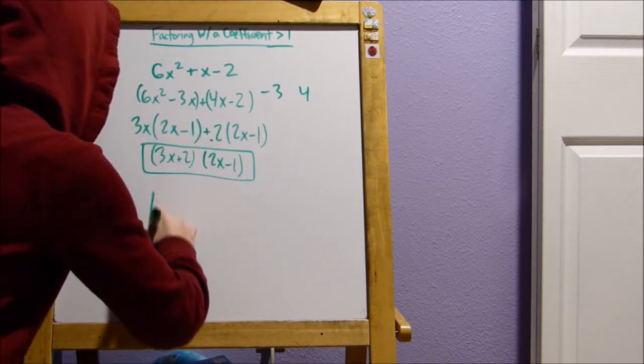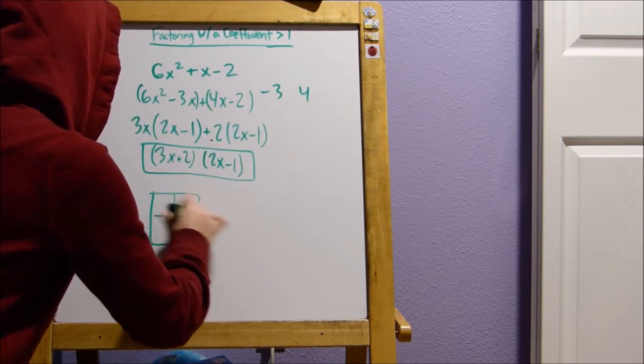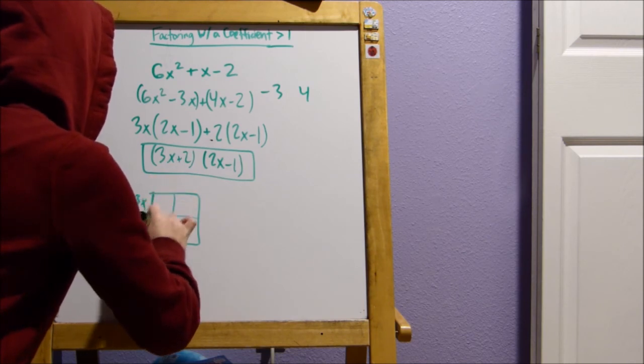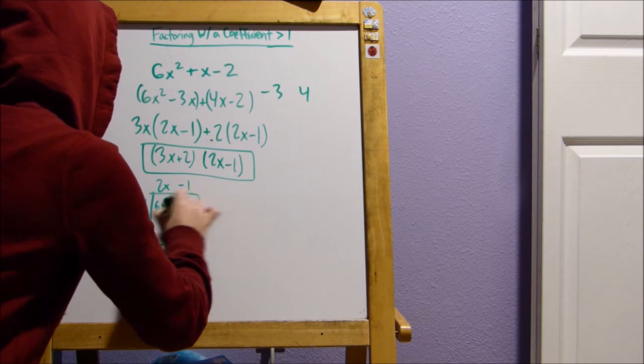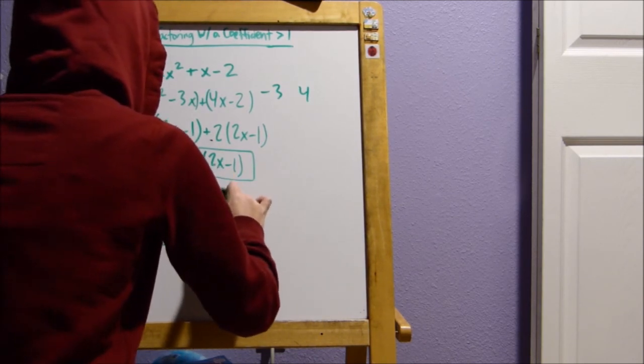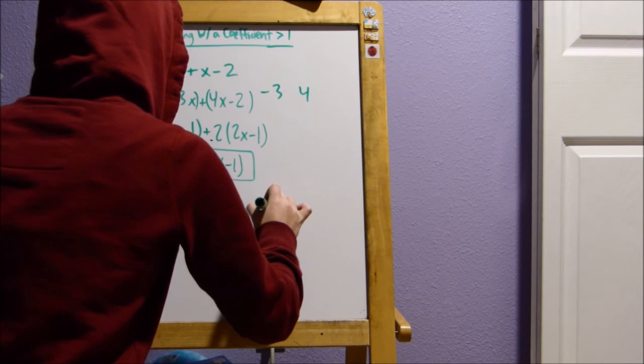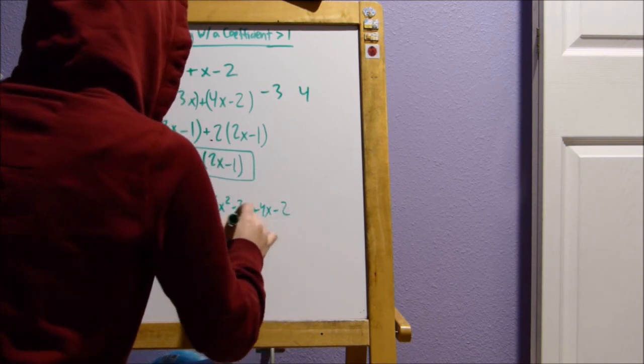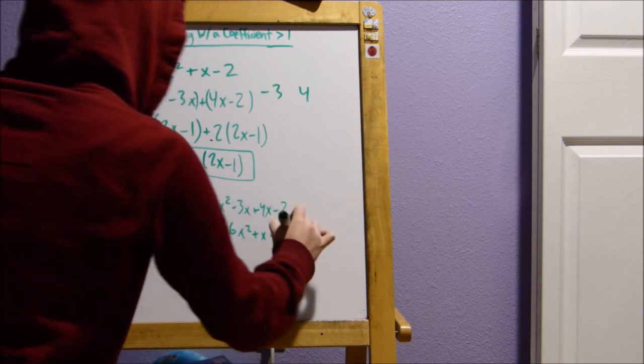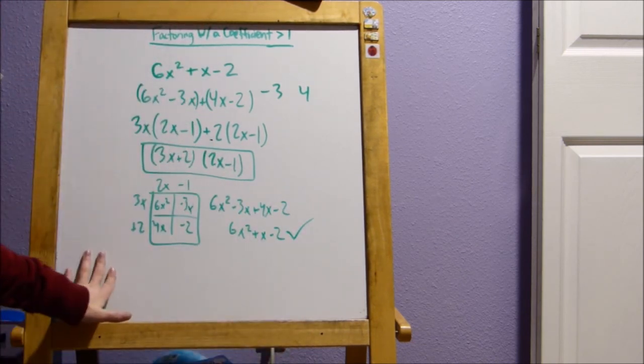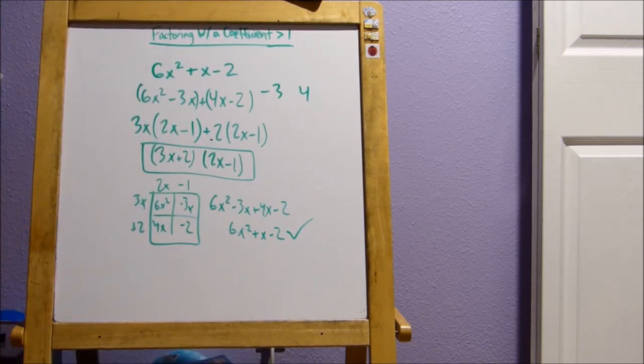And you'll see that if we do this little box, 3x plus 2, 2x minus 1, 6x squared minus 3x, 4x minus 2, 6x squared minus 3x plus 4x minus 2, 6x squared plus x minus 2. So, ding! That's how you factor with a coefficient greater than 1.